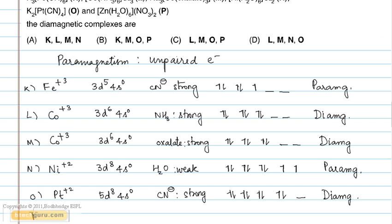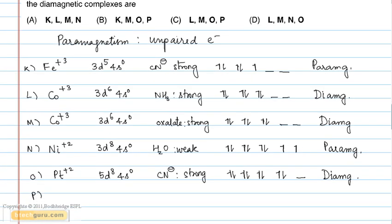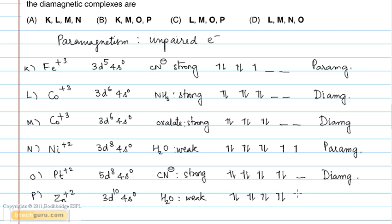Complex P is [Zn(H₂O)₆](NO₃)₂. Here Zn exists in the +2 state. The electronic configuration is 3D¹⁰, 4S⁰. The ligand H₂O is a weak field ligand and cannot cause spin pairing to occur. However, 3D¹⁰ is a fully filled orbital, so there are no unpaired electrons. Hence, it will be diamagnetic.